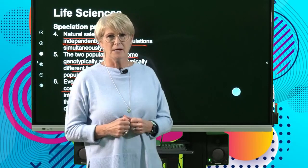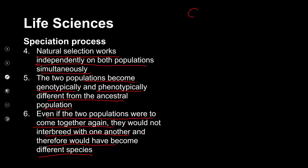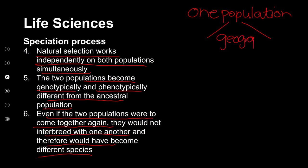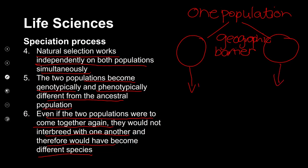Let's quickly summarize. We start with one population, that population is split into two by a geographic barrier, and natural selection occurs independently on each side. Eventually they become two new species, and this is how speciation occurs.